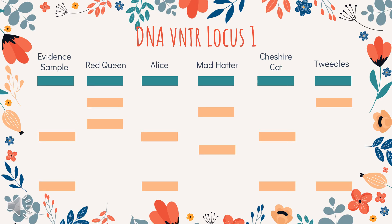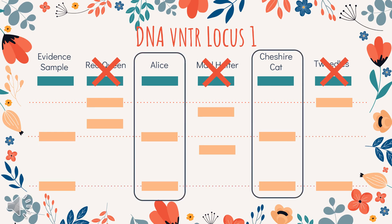So let's go through each suspect from Wonderland to determine if they committed the crime. Starting with the Red Queen, we can see that her banding pattern doesn't match the evidence sample, as to be expected. The same can be said for the Mad Hatter and the Tweedled twins, whose alleles do not match the evidence sample. Something to note, though, is the parentage of the twins can be seen because they inherited one allele from their mother, the Red Queen, while the other allele would come from their father, who is unknown. With those three suspects out of the picture, it's now clear that both Alice and the Cheshire Cat have DNA banding patterns that match perfectly to the evidence sample. Looking at the second locus will help us clarify which of the two it could be, since the results are still unclear.